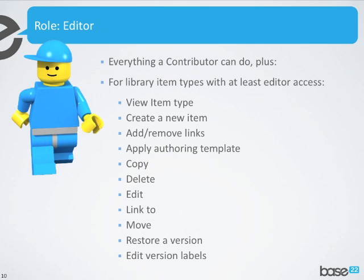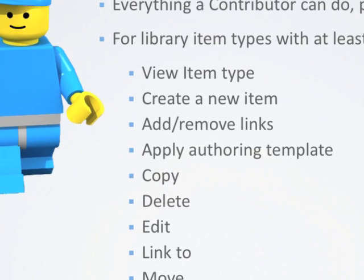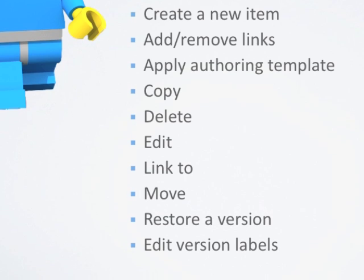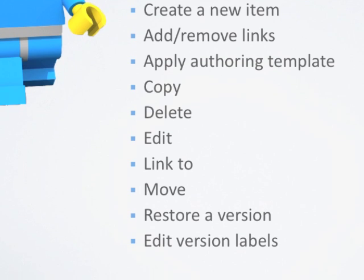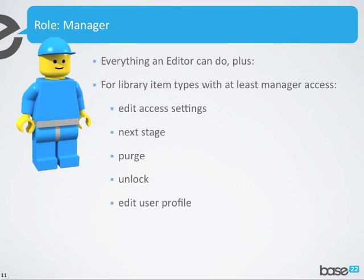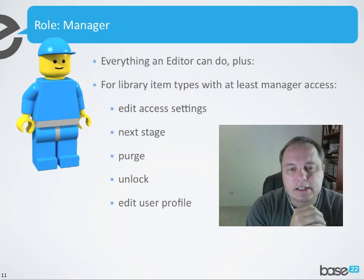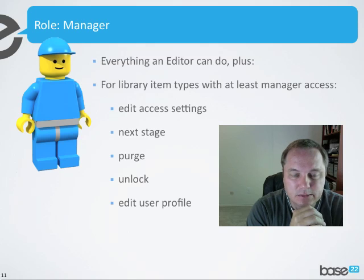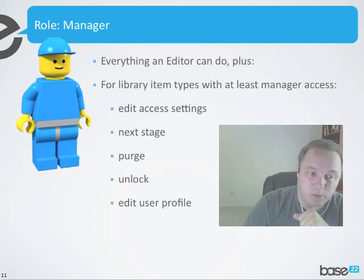Next up in the chain is the editor role. In general, an editor can do everything a contributor can do, with the addition of viewing item types, creating new items, adding and removing links, applying authoring templates, copy, delete, edit, and things like that. Moving up in the chain is the manager role. A manager can do everything an editor can do, plus the manager can edit access settings, push items into the next stage of the workflow, purge deleted items, unlock locked items, and edit user profiles.